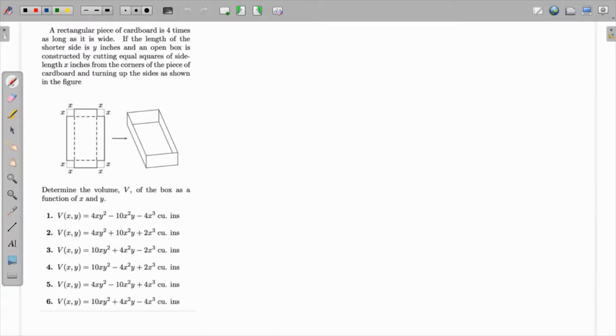In this question, we have a rectangular piece of cardboard which is four times as long as it is wide. So let's say this is 4y and it is wide by y units. It is an open box to be constructed by cutting small squares of side x units from each corner and then turning the sides up.